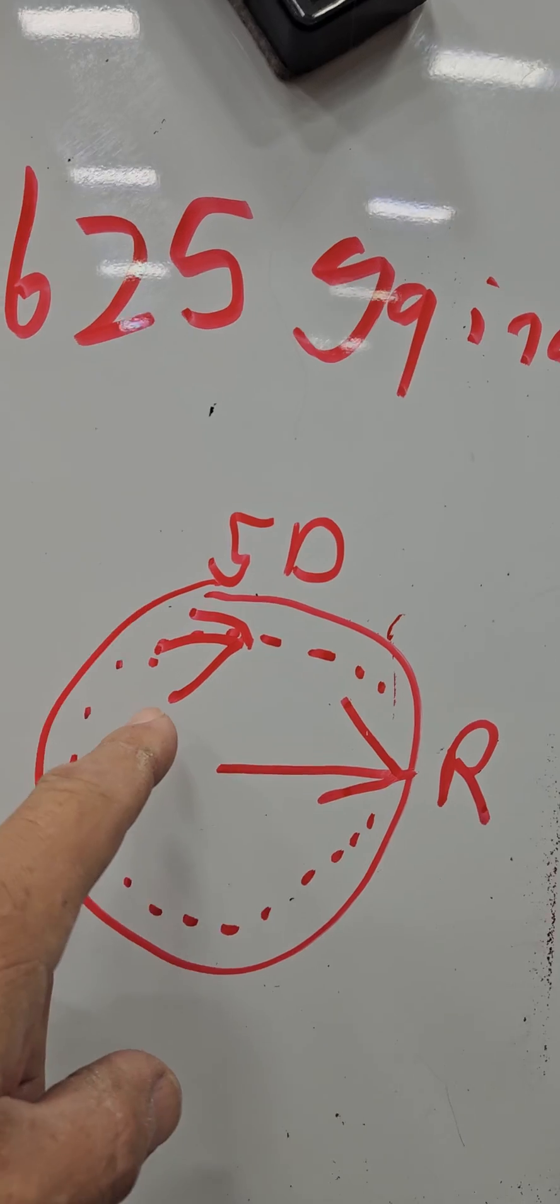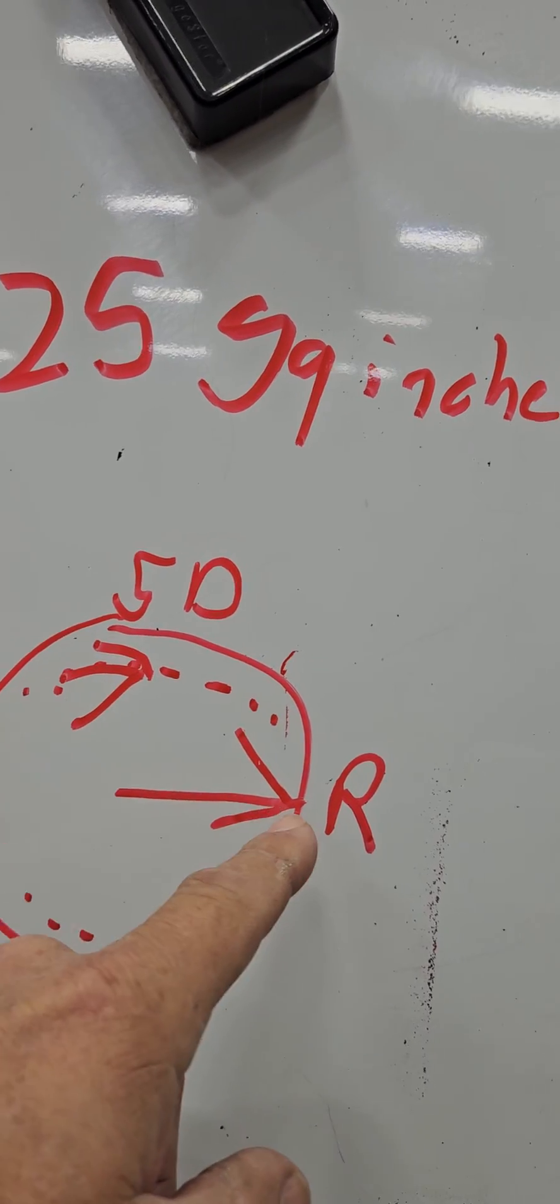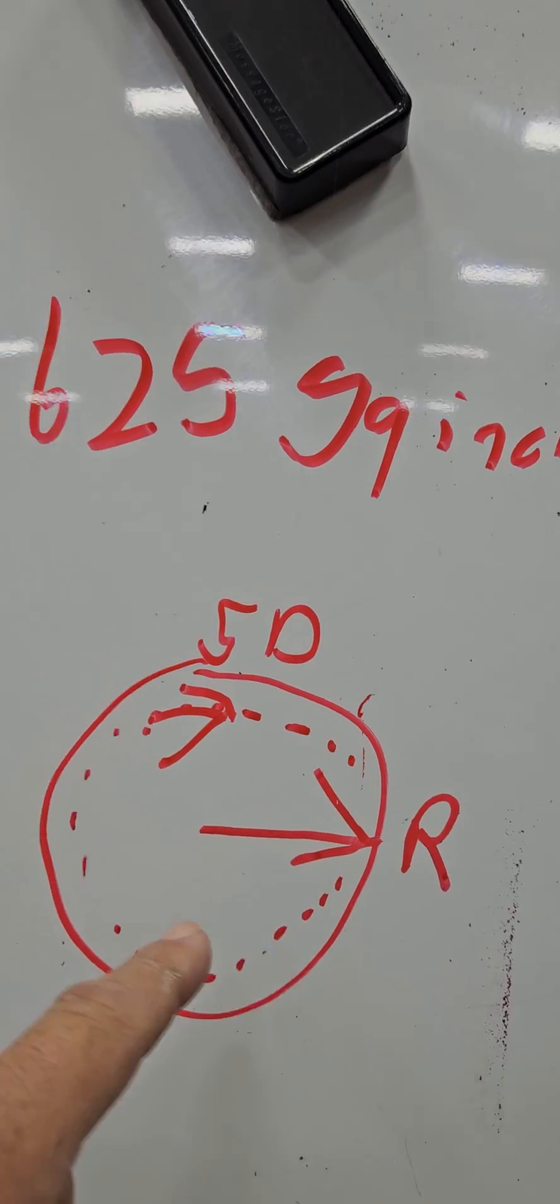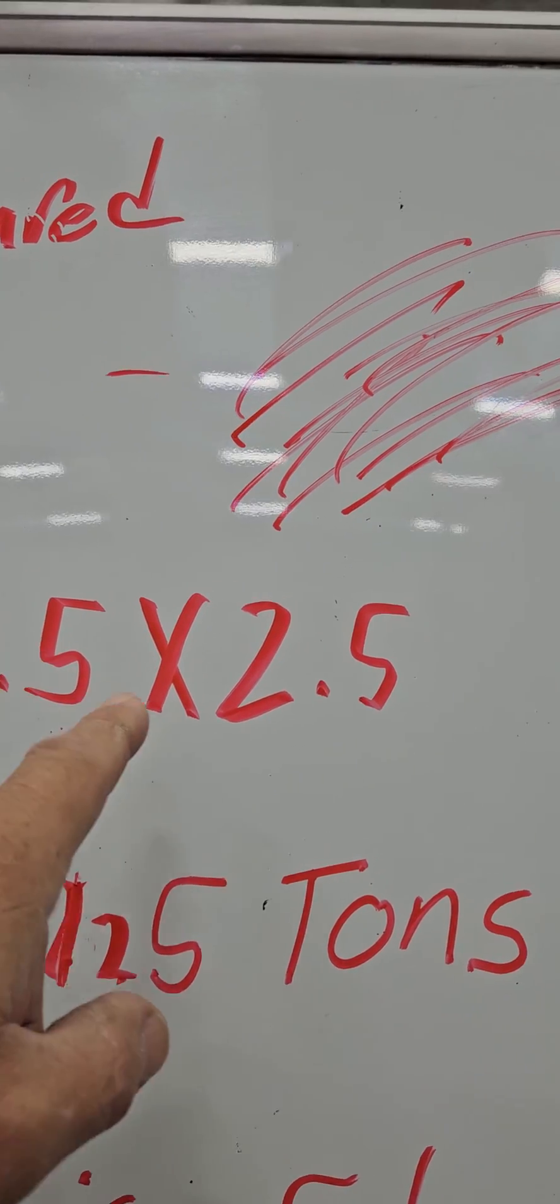So here again is your 5 inch diameter. Radius is half of that, 2.5. To square radius, you times it by itself.